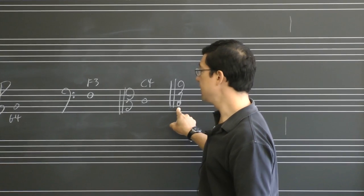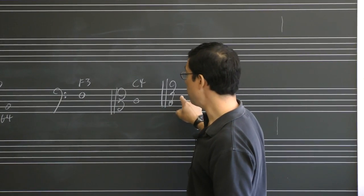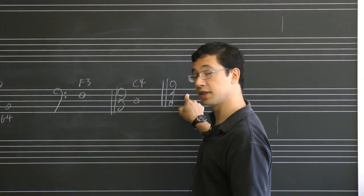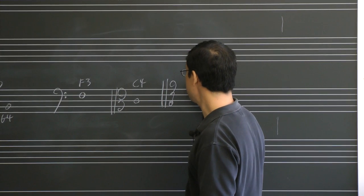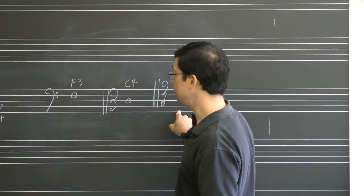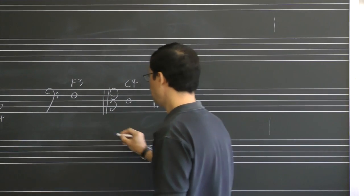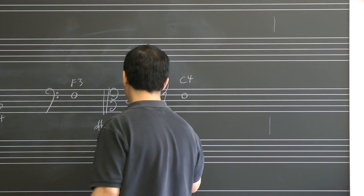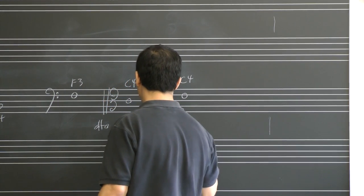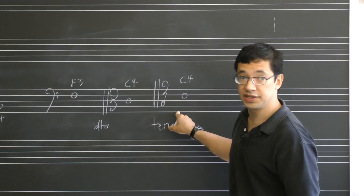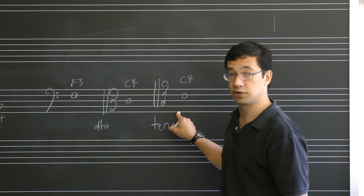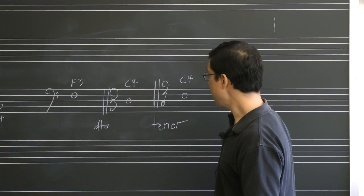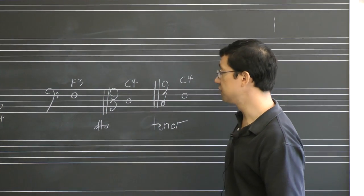The final clef that we'll learn is this one. It's one up from the alto. So when this fourth line is middle C, this is called tenor clef. This is used by cellos and bassoons when they're in the higher register. It's also a clef you'll encounter with some frequency.